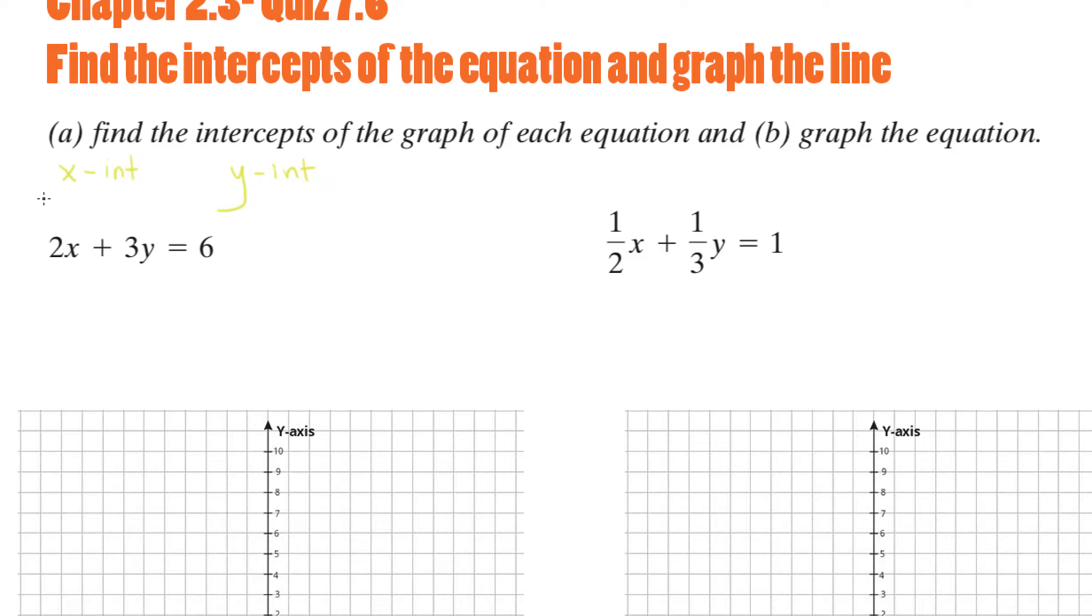For the x-intercept, we plug in 0 for y and we get a number, call it a. For the y-intercept, we plug in 0 for x and we get a number, call it b. So in order to find the x and the y intercept, we need to plug in those values independently, not at the same time.